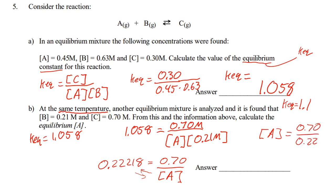So, concentration of A equals 0.7 over 0.22218. And, that will be the concentration of A. So, 0.7 divided by 0.22218. So, the concentration of A is 3.15.